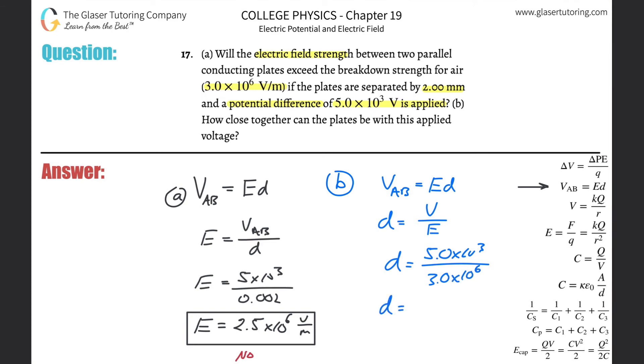And let's throw that into the calculator. So 5 times 10 to the 3rd divided by 3 times 10 to the 6th. And this works out to be about 1.7 times 10 to the minus 3.